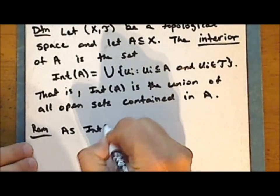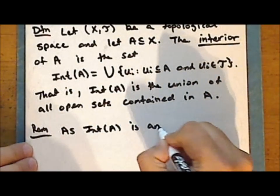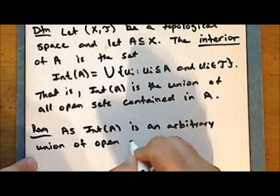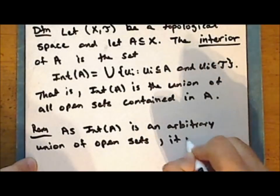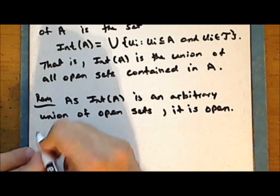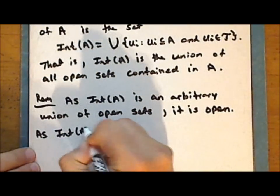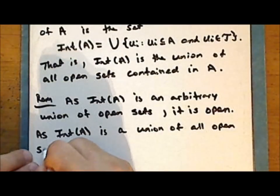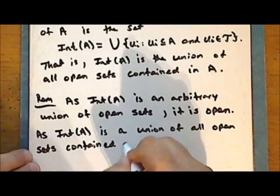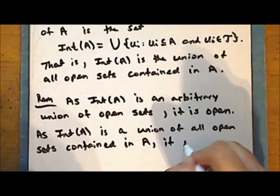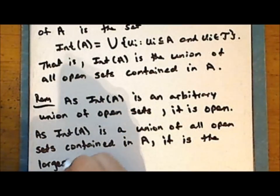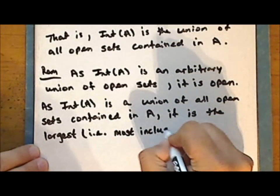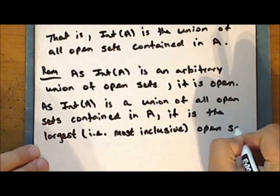Since the interior of the set A is an arbitrary union of open sets, it is open. And since the interior of the set A is a union of all open sets contained in the set A, it is the largest — and by largest we mean the most inclusive — open set contained in the set A.